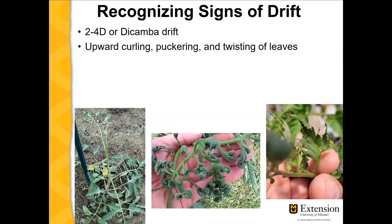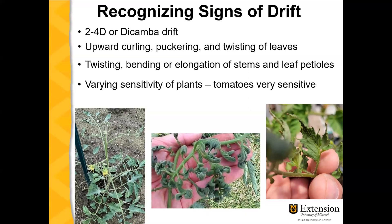Thinking about herbicide drift symptoms — broadleaf herbicides like 2,4-D or dicamba cause a fairly characteristic upward curling or puckering of the leaves, which you can see in the middle photo. It can also cause elongation of stems and leaves. The picture on the right from a greenhouse shows very elongated leaf structure, and the picture on the left shows how elongated the stems can get. Though it looks like the plant was grown in shade, it was in full sun the whole time. Some of the younger leaves are also twisting.